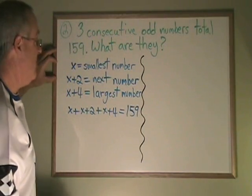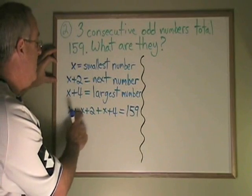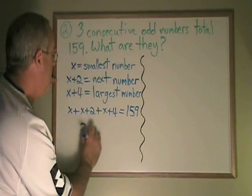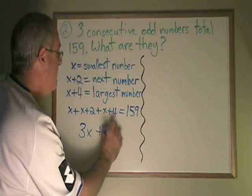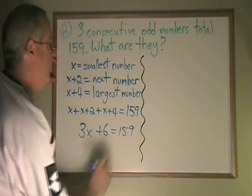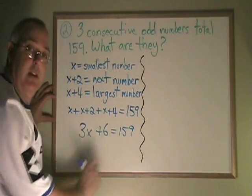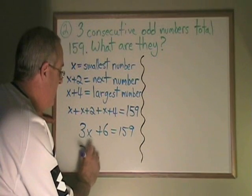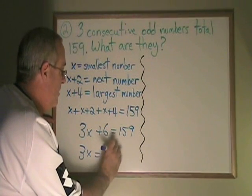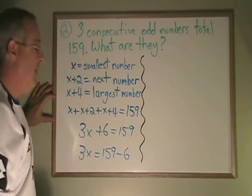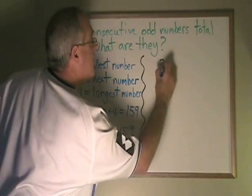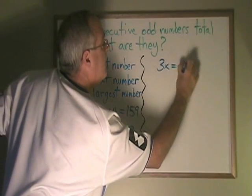Now let's do the algebra to solve this. x plus x plus x is 3x. 2 plus 4 is 6. Now I'm going to move the 6 to the other side of the equals. 159 minus 6 is 153. So, 3x equals 153.